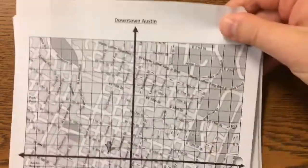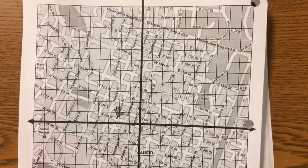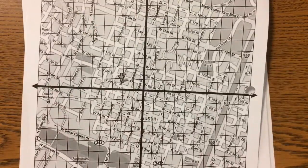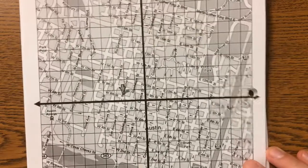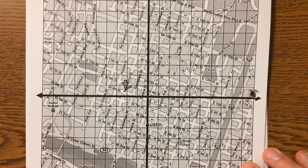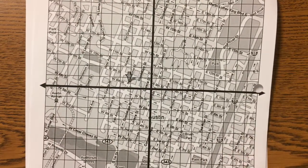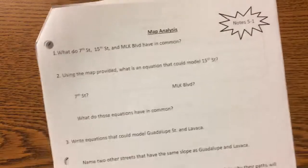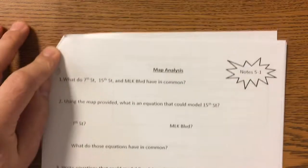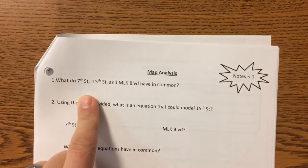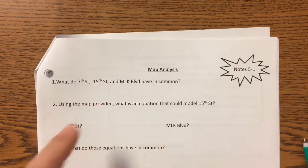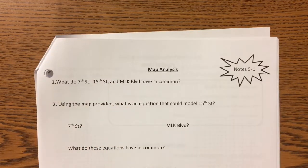All right, so we've got a little map of downtown Austin here. We're going to answer some questions about this map. You all ready for this? The first question is: what do 7th Street, 15th Street, and MLK all have in common?